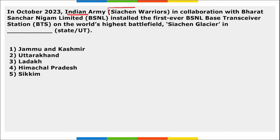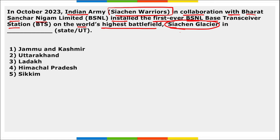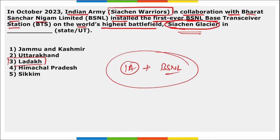Indian Army Siachen Warriors, in collaboration with Bharat Sanchar Nigam Limited, installed the first-ever BSNL-based transceiver station on the world's highest battlefield — Siachen Glacier. Siachen Glacier is located in Ladakh. Siachen Warriors is a battalion of the Indian Army. They collaborated with BSNL to install this world-first transceiver on the world's highest battlefield.